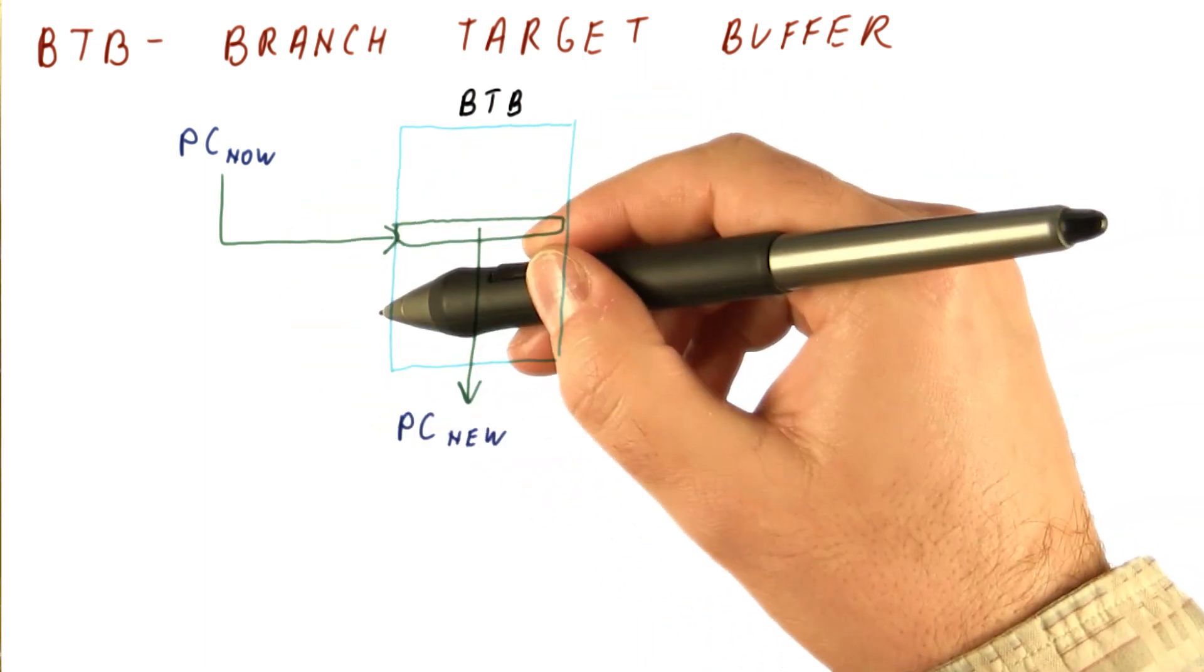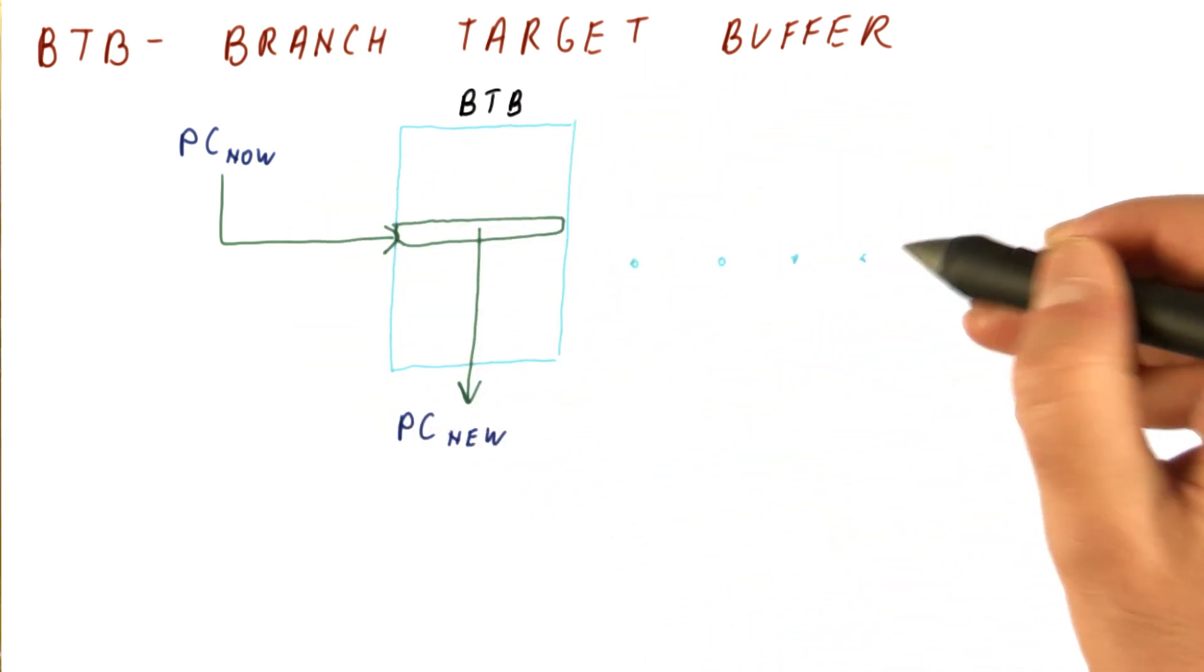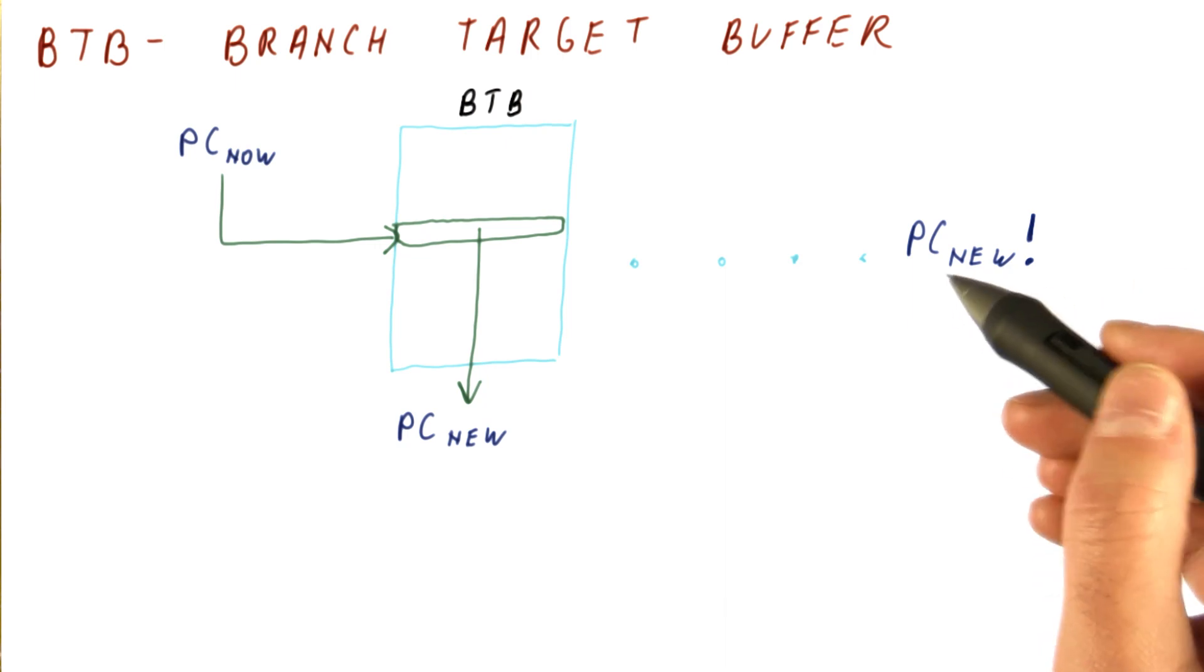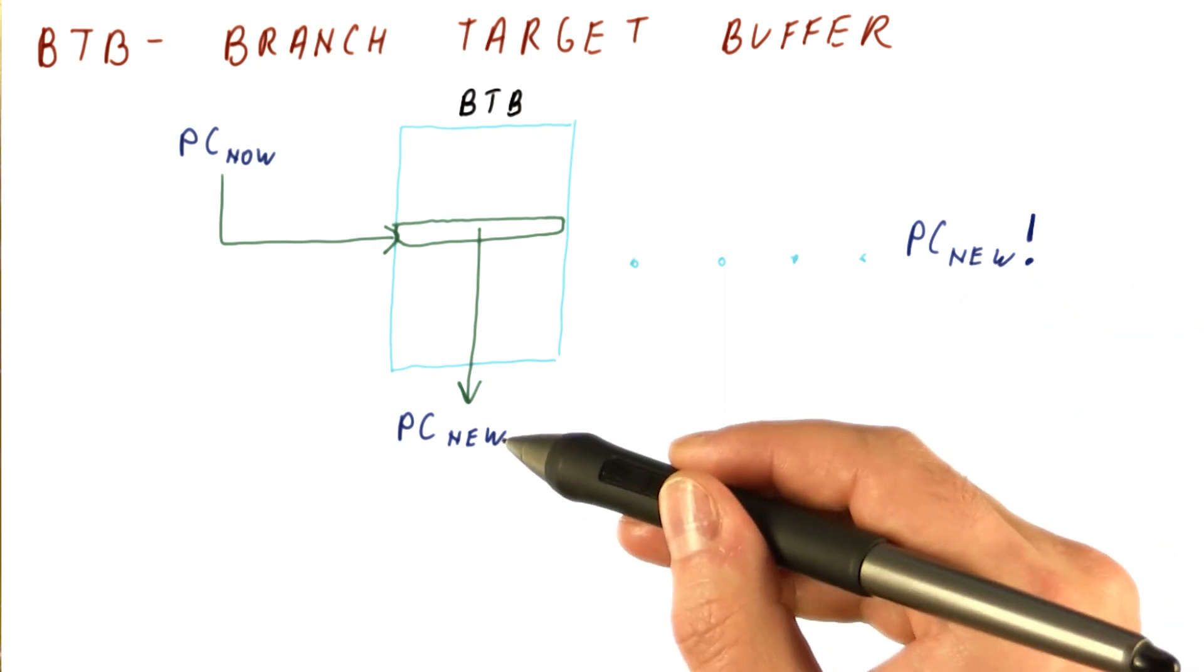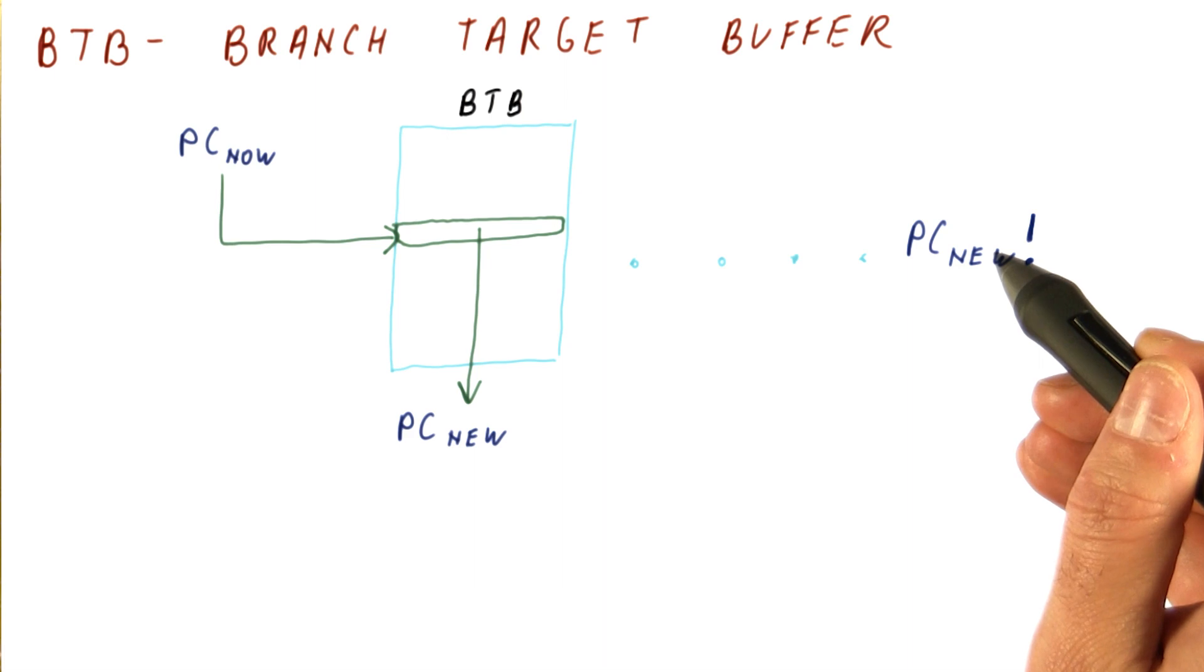So this is what happens at fetch. Later on in the pipeline, we have the correct PC new. At that point, we will compare the predicted one with the correct one. And if they're not equal, we will treat that as a misprediction.